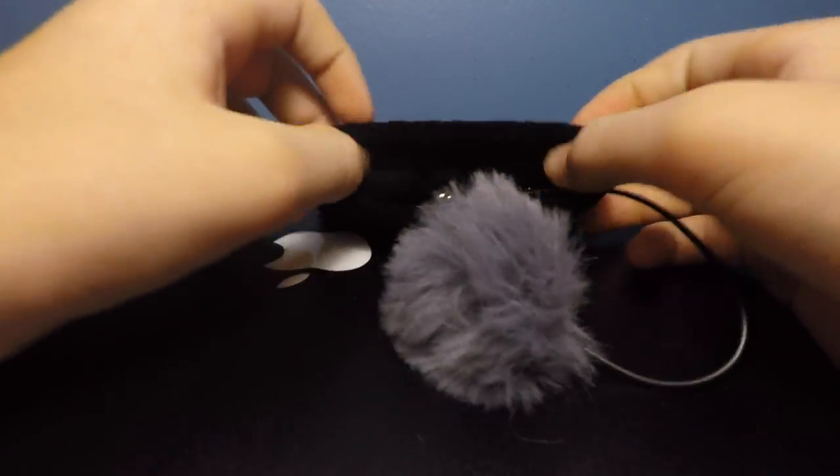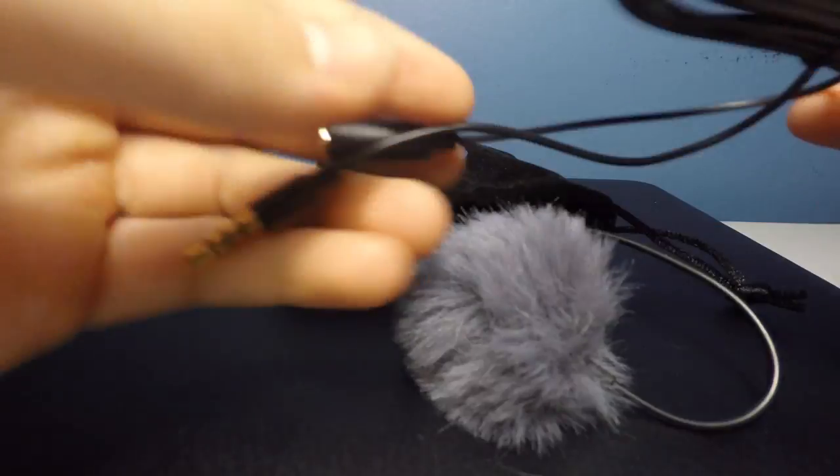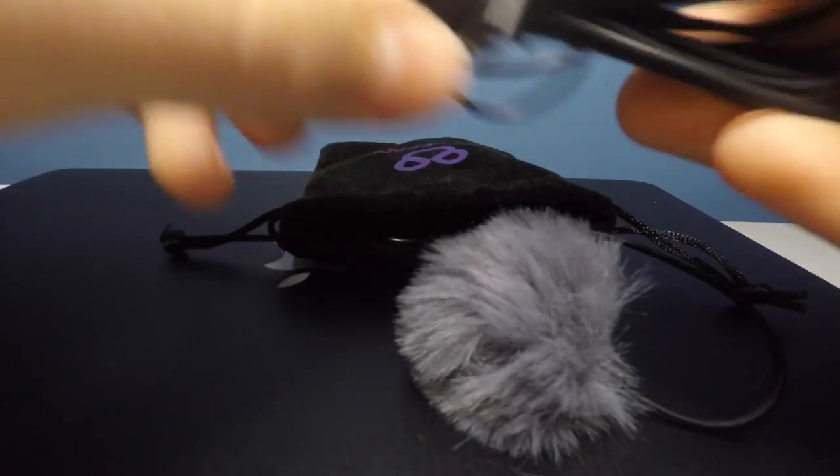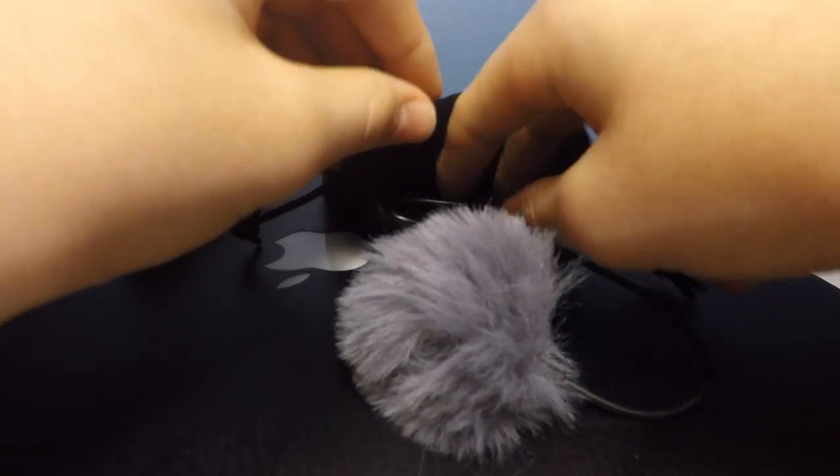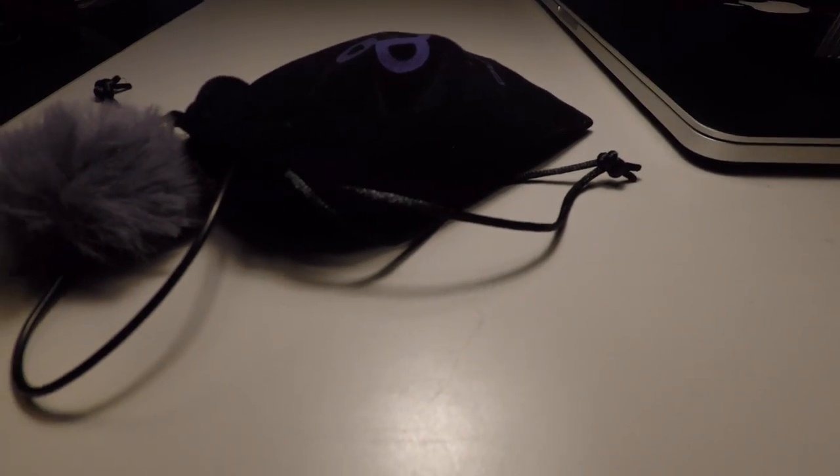The first thing on the list is a lavalier mic by Purple Pandas. Opening the felt pouch reveals a nine-foot extension cord and the mic itself with a wind protector. This mic is used to improve wind noise while skiing and mountain biking for my GoPro.